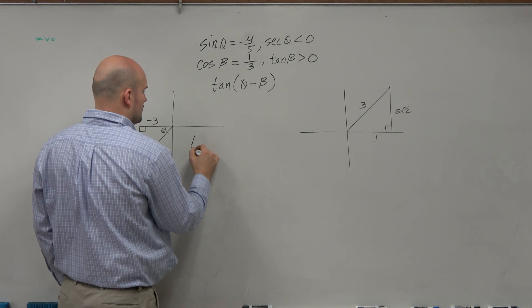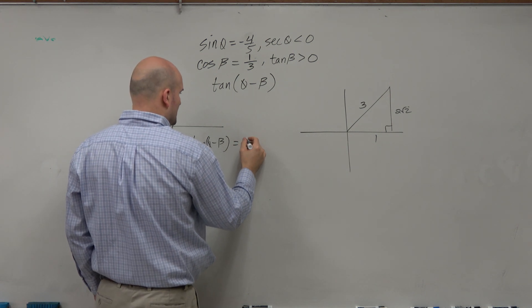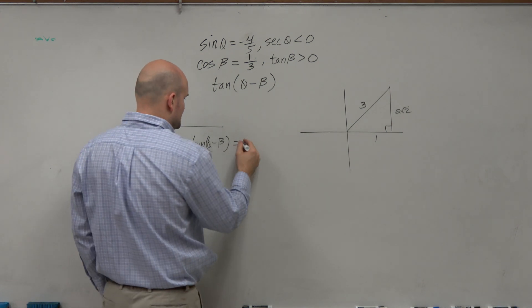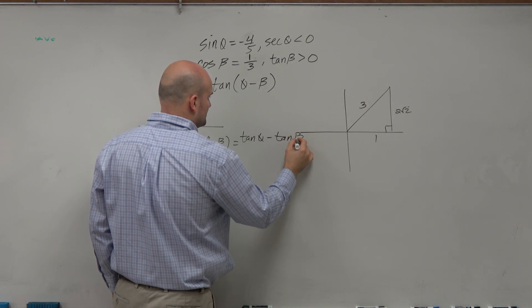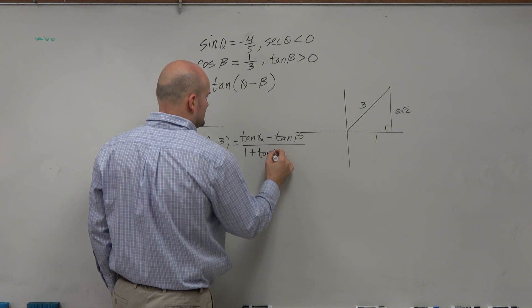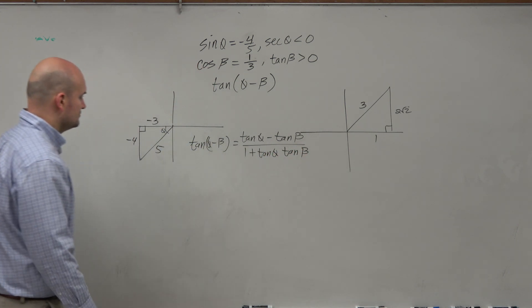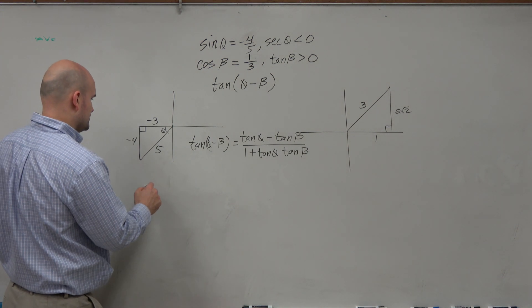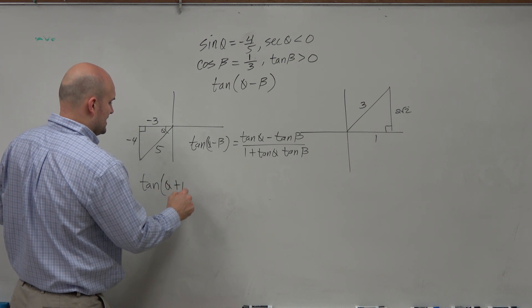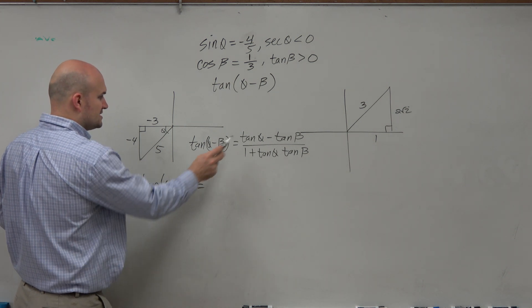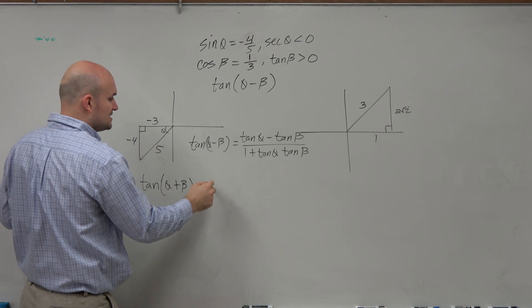All right. So now, let's go ahead and use our formula. So tangent of theta minus beta is tangent of theta minus tangent of beta all over 1 plus tangent of theta times tangent of beta. So if we're going to do the tangent of theta plus beta, that's now going to look like this. Tangent of theta is opposite over adjacent, right, which is a positive 4/3.